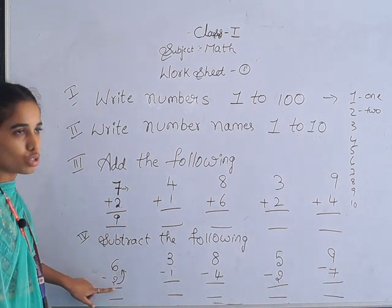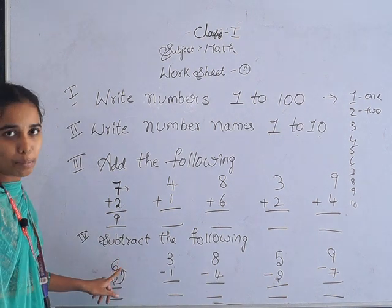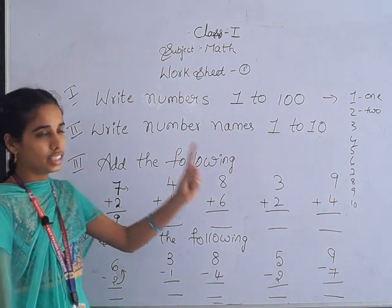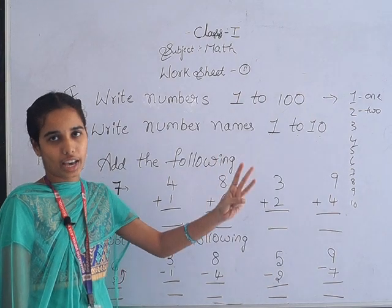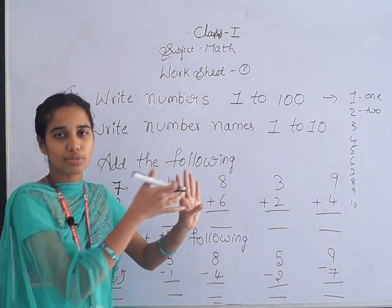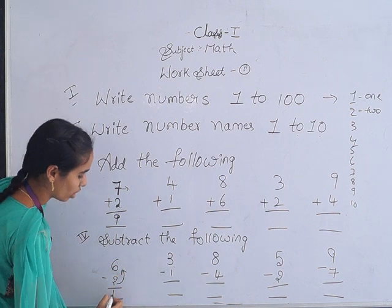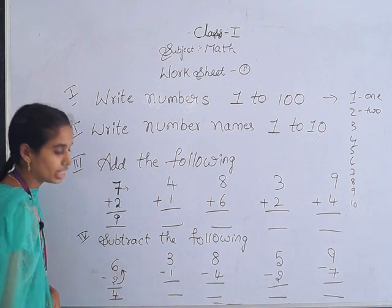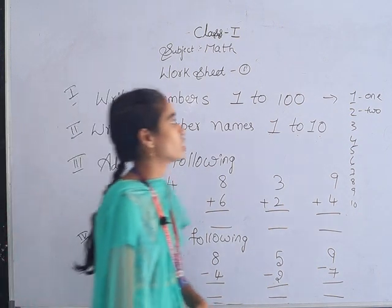Two. So count after two up to six - that means three, four, five, six. How many fingers did we open? Four. So the answer is four. Like that, you have to do the remaining problems. This is worksheet number one.